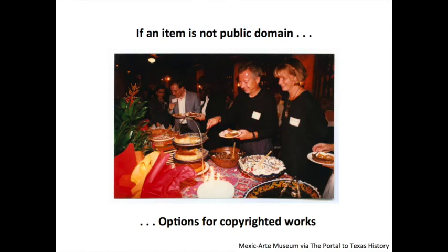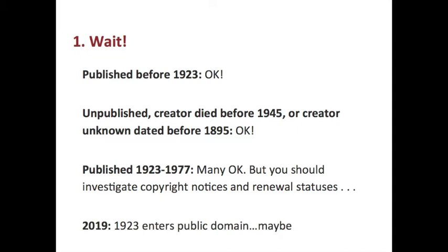When an item is not in the public domain, what are your options for working with copyrighted works? Well, waiting is always an option — you can still rely on things published before 1923, unpublished material that meets the death-date or 120-year criteria, and many items published between 1923 and 1977 where you've investigated copyright notices and renewal statuses. But it's worth noting that waiting may take a while. The Copyright Term Extension Act pioneered by Sonny Bono in 1998 added a lot of additional time to copyright term, and the effect is to have put a freeze on content entering the public domain — content published in 1923 will enter the public domain in 2019, maybe, unless there is additional extension activity.